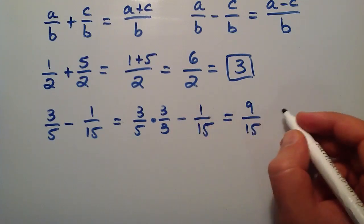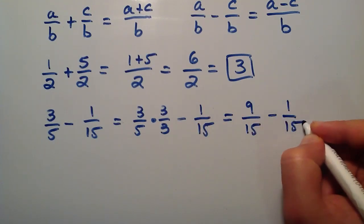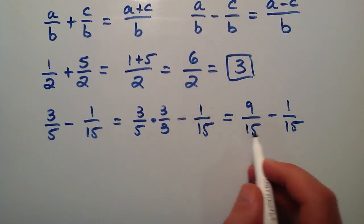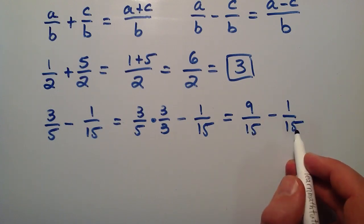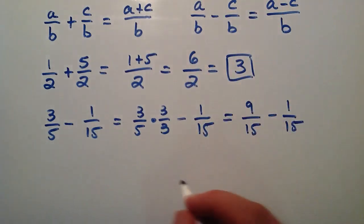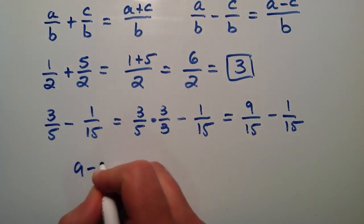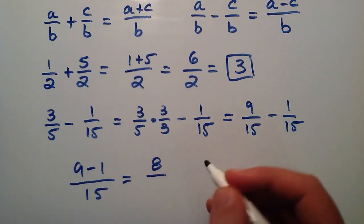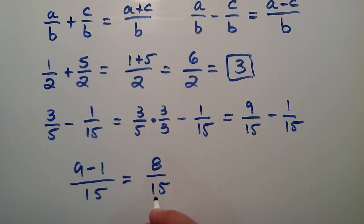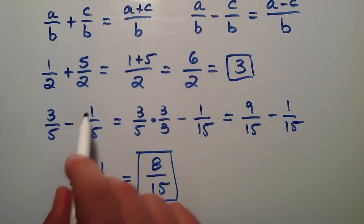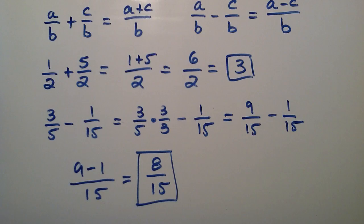And then we subtract the second term, minus one over fifteen. This is essentially in the form we need it now. We have a fifteen on both of the denominators here. And so we simply take the numerator of the first and subtract the numerator of the second. So this becomes nine minus one divided by fifteen. And nine minus one is equal to eight. And we have the common denominator of fifteen now. So we just solved three fifths minus one fifteenth is equal to eight fifteenths.